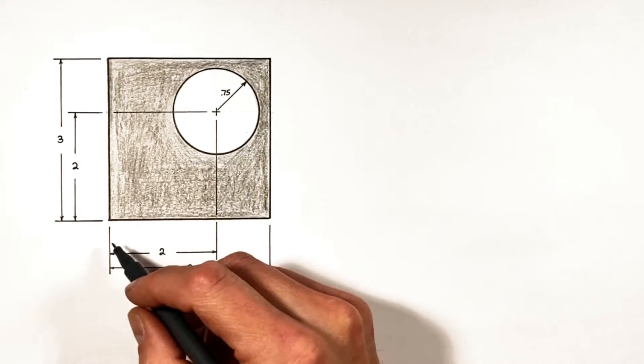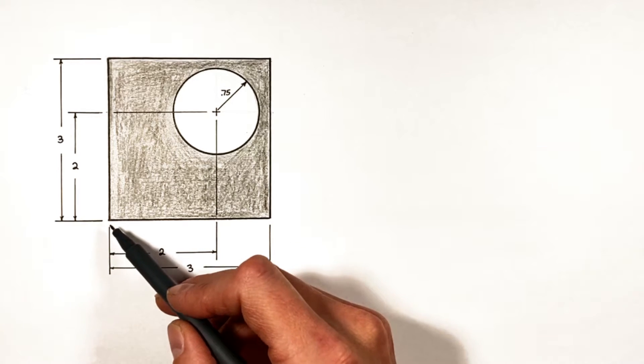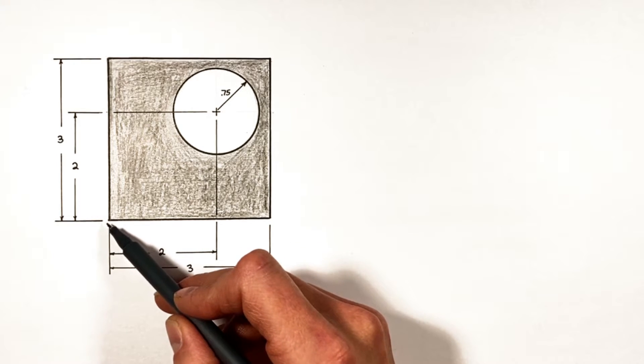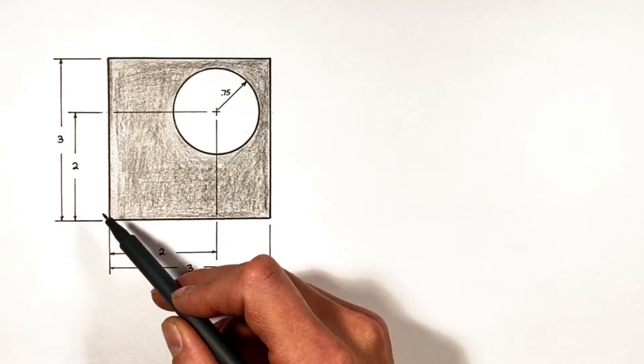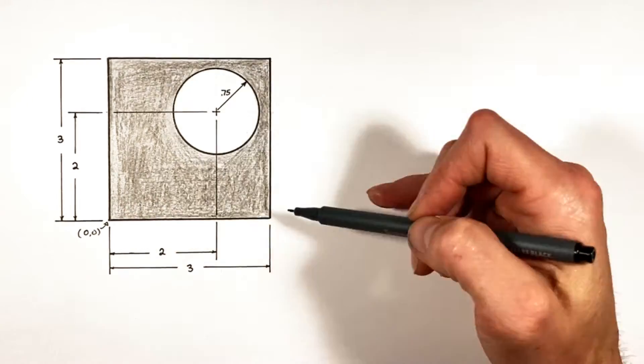Anytime we're doing a center of mass problem, the first thing we need to do is establish some reference position or an origin. The easiest place to do that is this bottom left corner right here, so we're going to call this zero-zero.